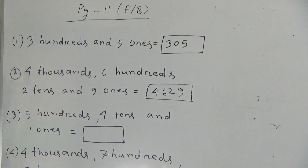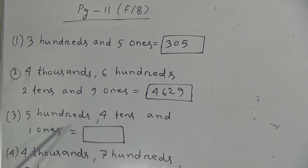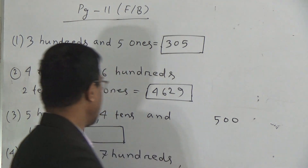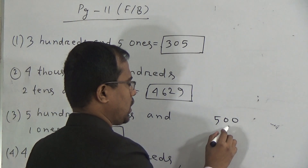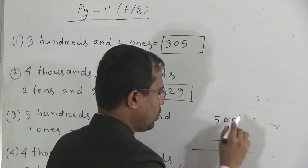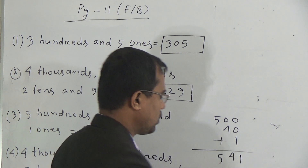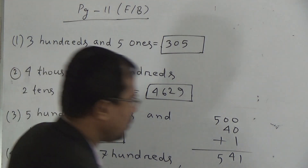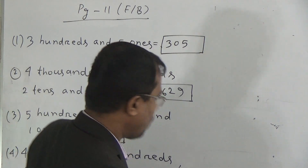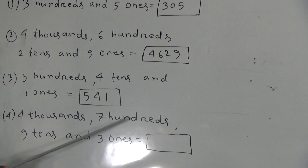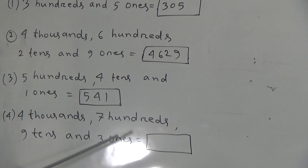Now we will solve question 3: 5 hundreds, 4 tens and 1 one is equal to what? 5 hundreds means 500. 4 tens means 4 × 10 = 40. 1 one means only 1. If we add 1, 4, and 5, the answer of question 3 will be 541.